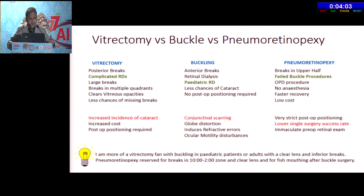With vitrectomy, there's an increased incidence of cataract, increased cost, and post-op positioning is required. With buckling, you have a lot of conjunctival scarring, globe distortion, and oculomotility disturbances. With pneumoretinopexy, you have very strict post-op positioning, a very low single-surgery success rate, and you need to do a very immaculate pre-op retinal examination.